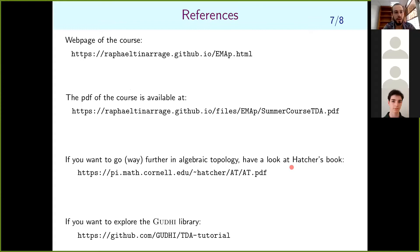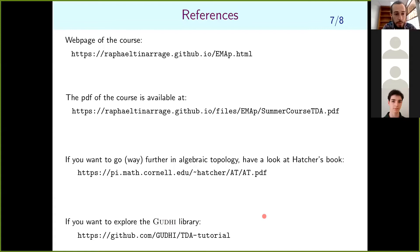A few references: here you can find the notes of the course. For those interested in algebraic topology, there is the best book in the world, which is free and available online: it is Alan Hatcher's 'Algebraic Topology.' It goes very far in the theory, so even if you only read the first pages, you will learn a lot. If you want to learn more about the Gudhi library for persistent homology, you can follow this link.